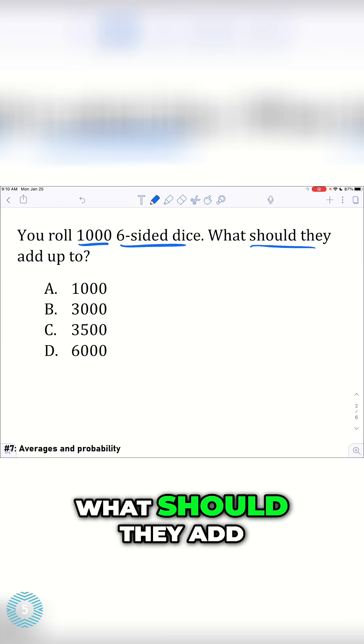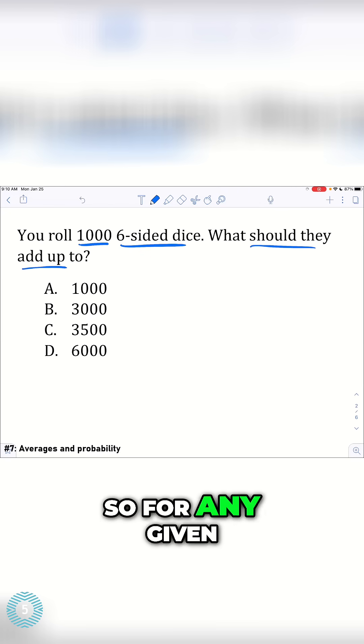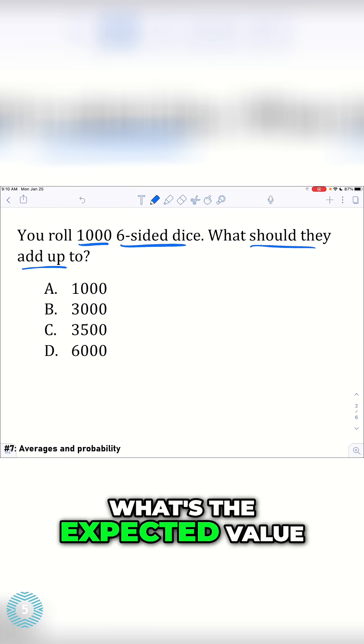You roll 1,000 six-sided dice, what should they add up to? So for any given dice roll, this is basically asking, what's the expected value?